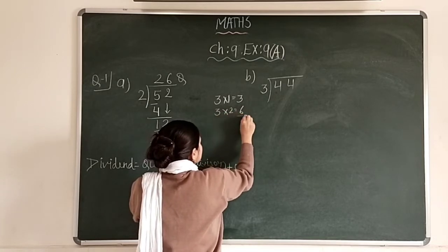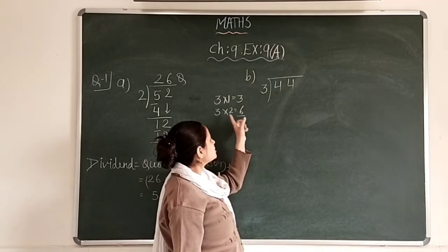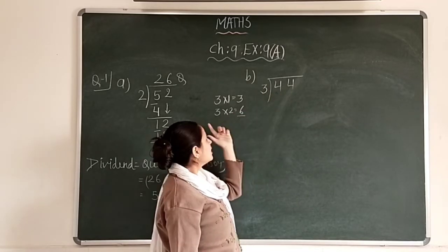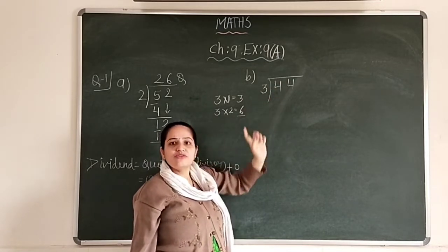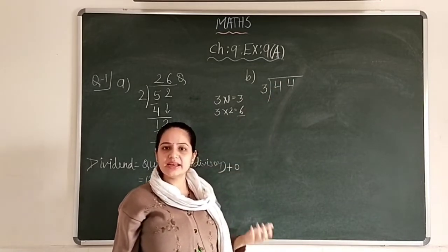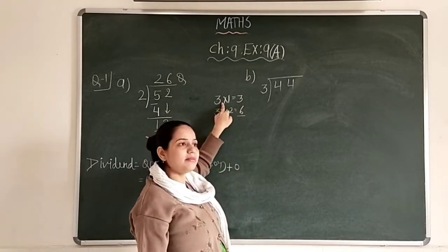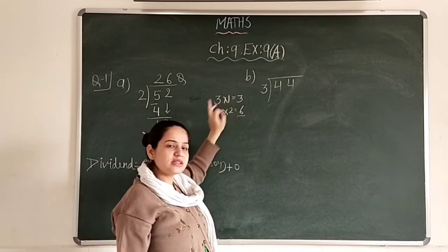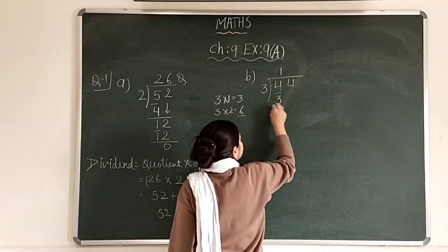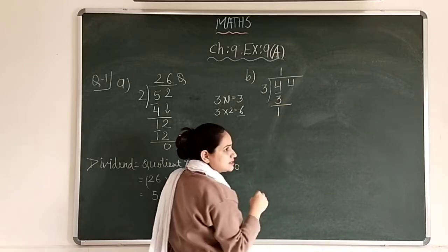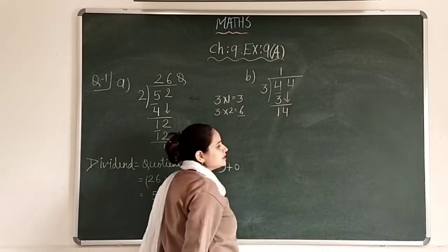Since 6 is greater than 4, you cannot write 3 2s are. So we write 3 1s are 3. Then 4 minus 3 equals 1, and we bring down the 1s digit, making it 14.